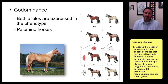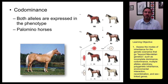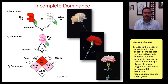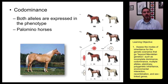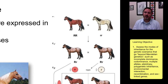Codominance is similar, but not the same. In codominance, both alleles are expressed in the phenotype. Both are being expressed, but the way they're expressed individually can make it look like they're being mixed, as if it were paint, like in incomplete dominance. A great example of codominance is Palomino horses. When you have a dark chocolate colored horse and a light cream colored horse and you bring them together, you get a Palomino horse — a tan colored horse.